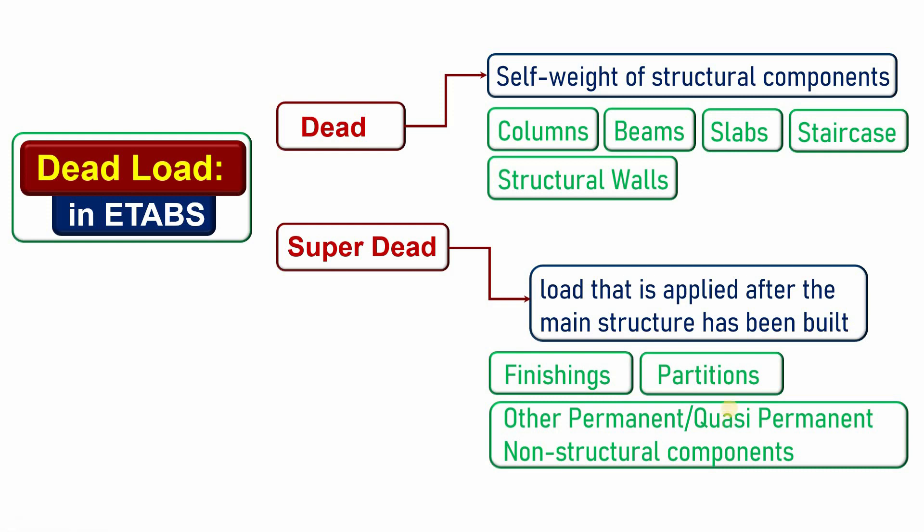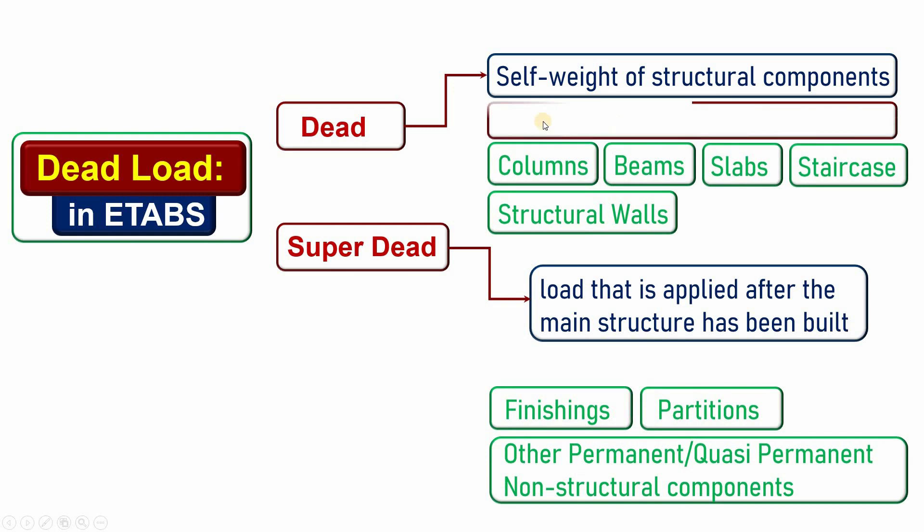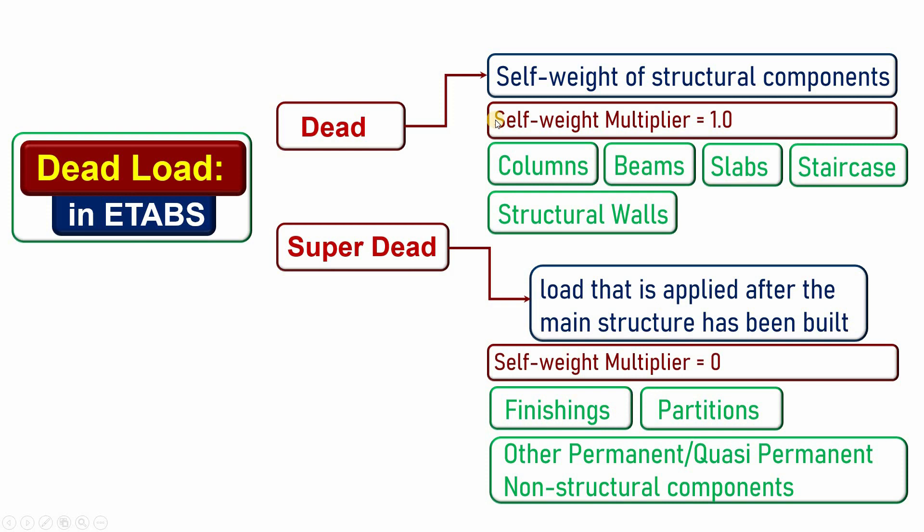Now if I come to the self-weight multiplier, the self-weight multiplier that will be used for the dead—that is for the column and the beam, the staircase and so on—the self-weight multiplier will be one. Make sure that this is one. If you make this one zero in ETABS, then it means that the self-weight of these all components will be neglected.